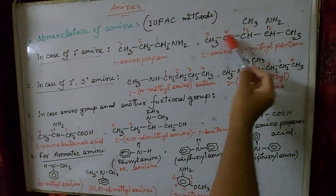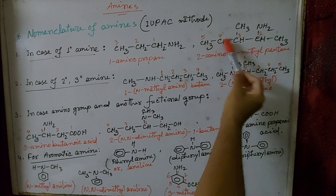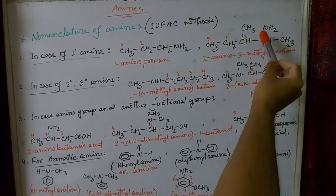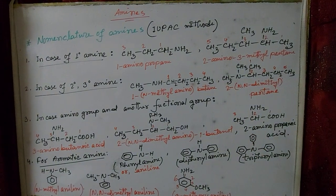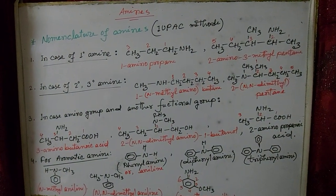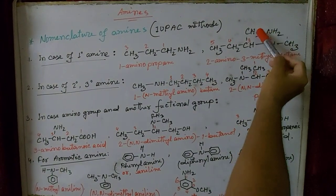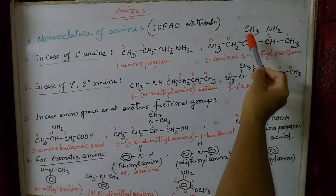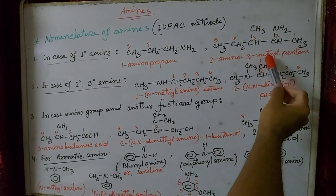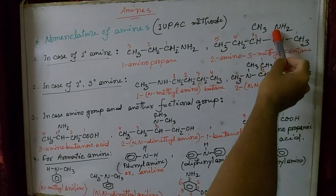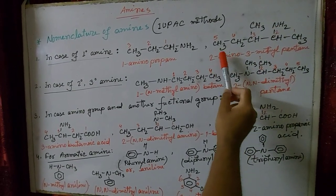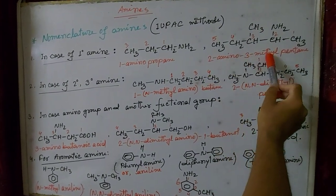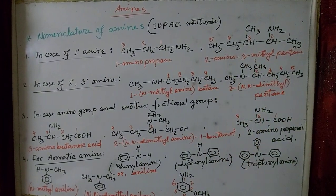The total number of carbon atoms in the main chain is 5, so it is pentane. For the substituents — amino and methyl — we arrange them in alphabetical order. Amino (A) comes before methyl (M), so I write the amino group first. That is why it is 2-amino-3-methylpentane.